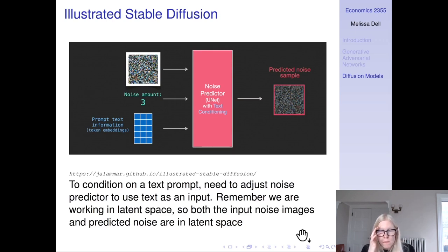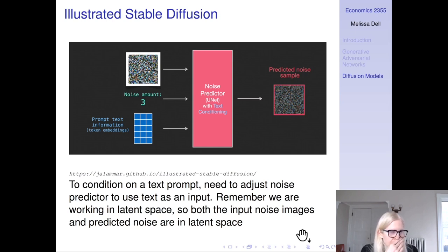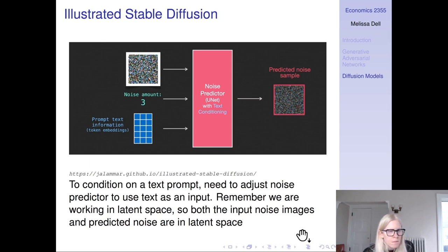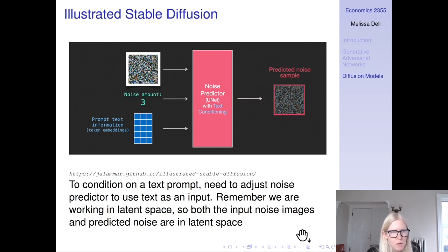How are we going to condition on text? We have this noise predictor — a U-Net that we've trained — and we want to train it not just to take noise as input, but to also take the text as input. Remember, we're working in latent space, so both the input noise and predicted noise are in latent space. Our inputs include the step we're at in the diffusion process, the latent representation of our input noise, and a text encoding. The output is a noise sample that we predict from the input noise to generate our image.